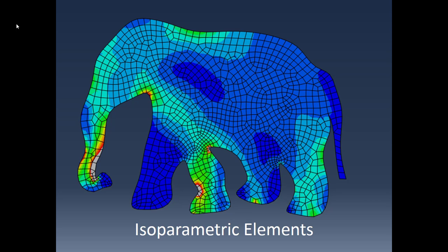This video introduces isoparametric elements. Isoparametric elements are an element type where we define the element in a local coordinate system and then transform it to a global coordinate system. We've done that before with bar and beam elements, but with isoparametric it's a particular type of transformation. 'Iso' means same and 'parametric' is related to the parameters that define our element. Specifically, an isoparametric element uses the same shape functions used to interpolate displacement to do a mapping from our local coordinate system to our global coordinate system.